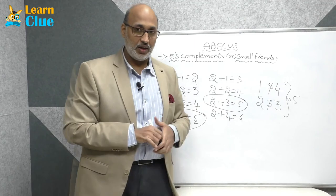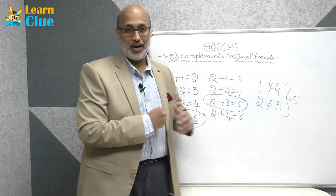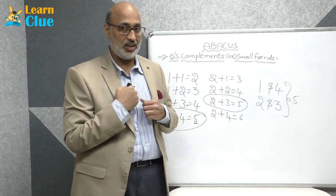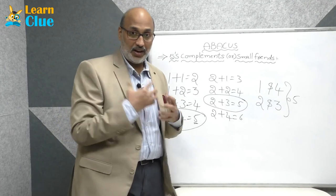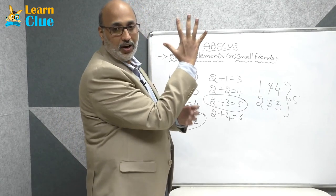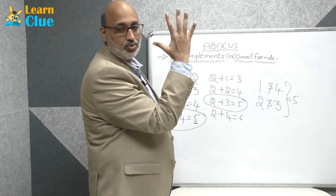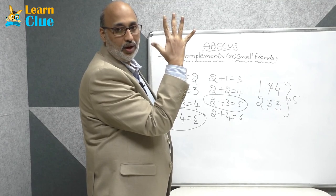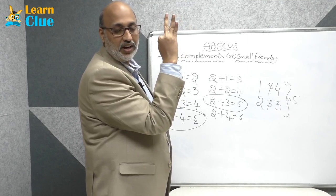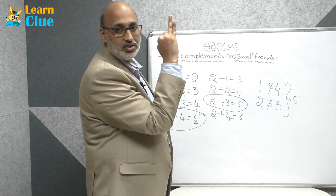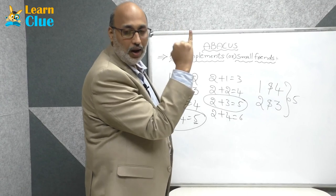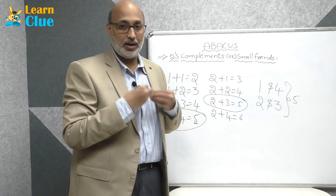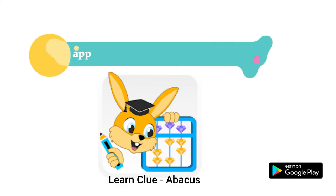Now, how to remember this friends group? Here is a simple activity with your five fingers. Open your five fingers — close one finger and four fingers are left, so one's friend is four. Close two fingers and three are left, so two's friend is three. Three's friend is two, and four's friend is one. This way you can easily remember the friends group.